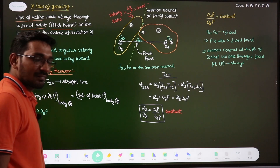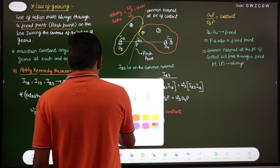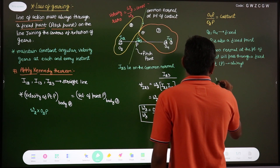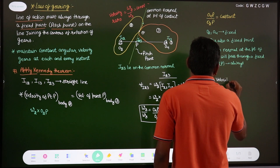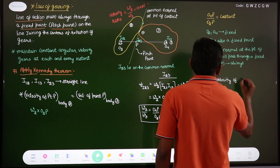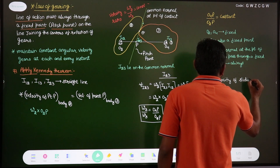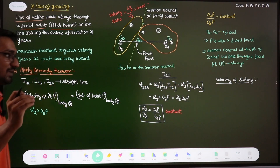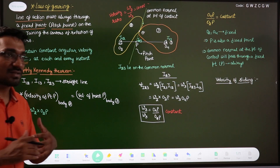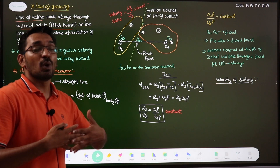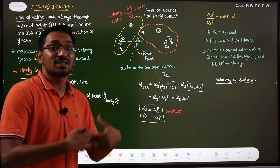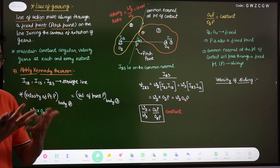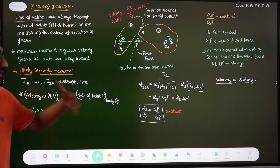In some questions, they will ask for the velocity of sliding. Do not confuse this with slipping. The gears must be in pure rolling motion — rolling without slipping. Slip is not possible, but the gears can slide.